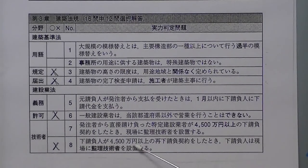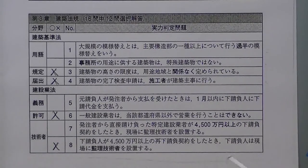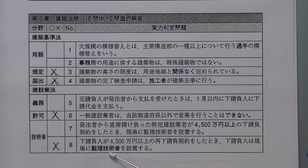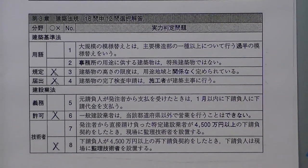8番、下請け業者が4,500万円以上の再下請け契約をしたときには、下請け業者が現場に監理技術者を置くとありますが、下請け業者はいくら仕事をもらっても必ず主任技術者でなければならない。監理技術者を置くのは最初に仕事をもらった特定建設業者だけです。